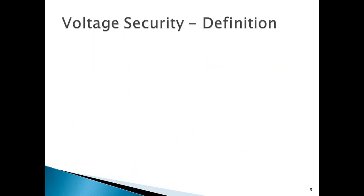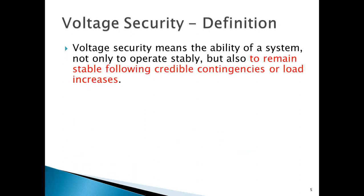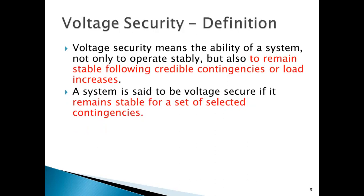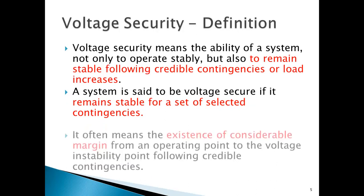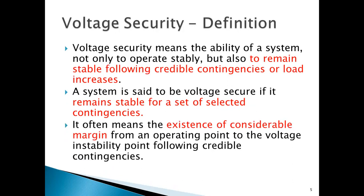Next, let me explain how voltage security is defined. As you see here, it is defined as the ability of a power system not only to operate stably but also to remain stable following credible contingencies or load increases. The credible contingency means severe faults or disturbances. A system is said to be voltage secure if it remains stable for a set of selected contingencies, i.e., outages. It often means the existence of a considerable margin — the distance between the current operating point to the maximum loadable limit or voltage instability point following incredible contingencies.